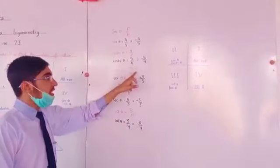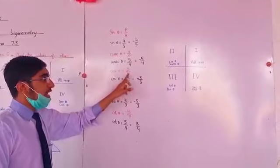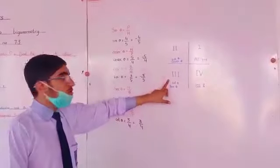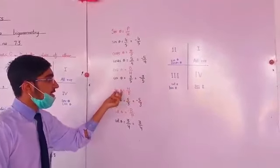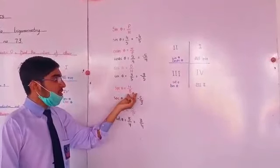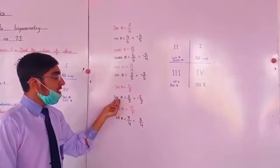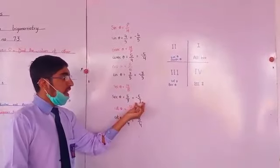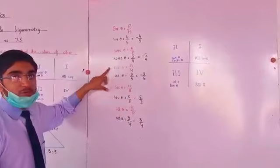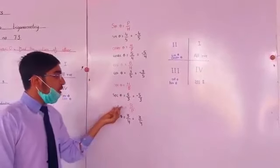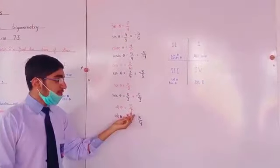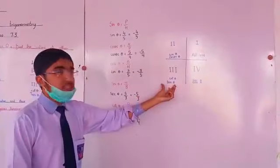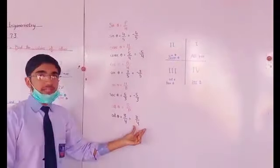Now cos theta is equal to base over hypotenuse, which is 3 over 5. In the third quadrant, cos theta is also negative, so we write a negative sign. Sec theta is equal to hypotenuse over base, which is 5 over 3. Sec theta in the third quadrant is also negative, so we write a negative sign. Cosec theta and sec theta are inverses of each other. Now cot theta is base over perpendicular, which is 3 over 4. In the third quadrant, cot theta is positive, so we do not write a negative sign with cot theta.